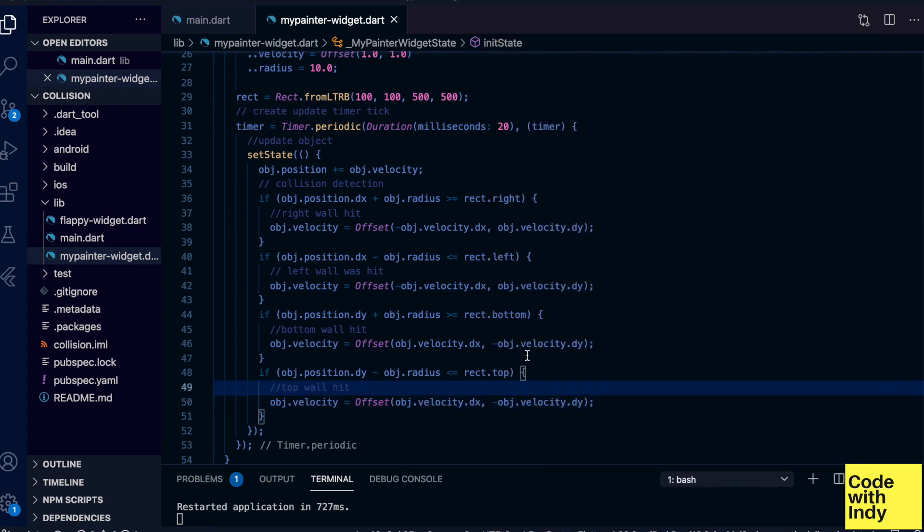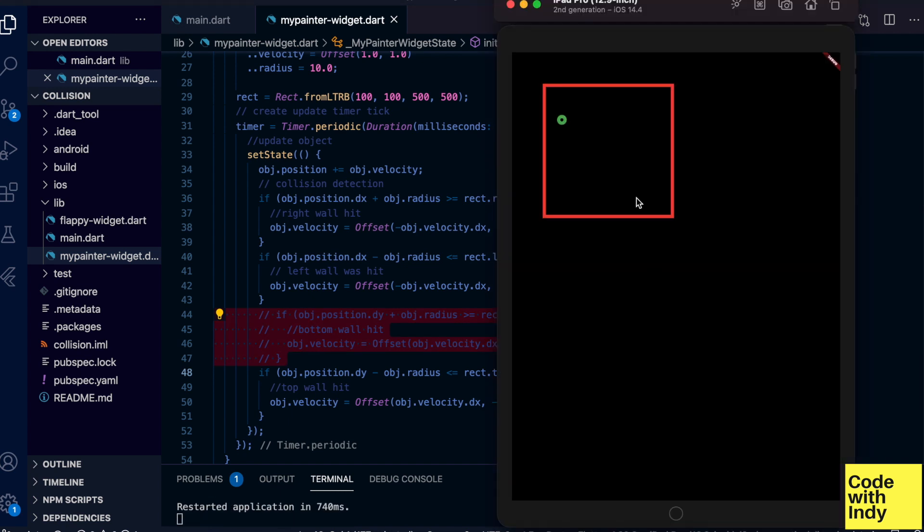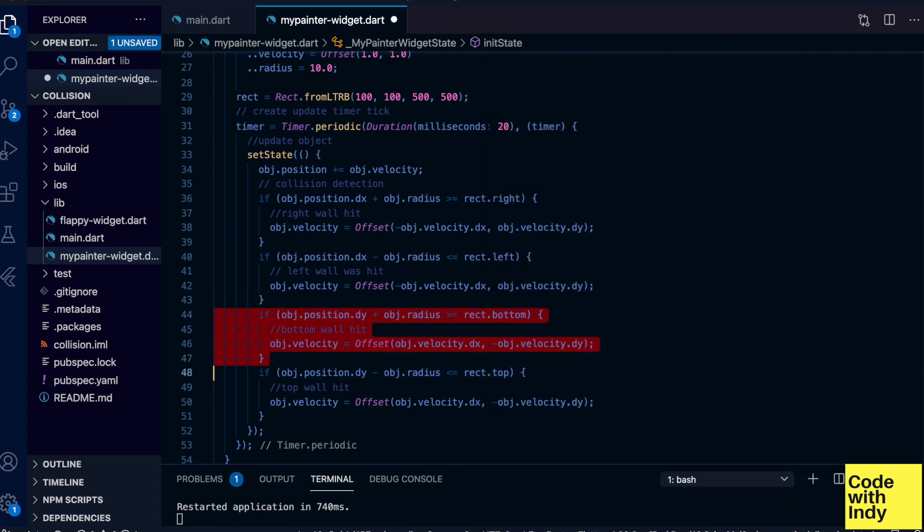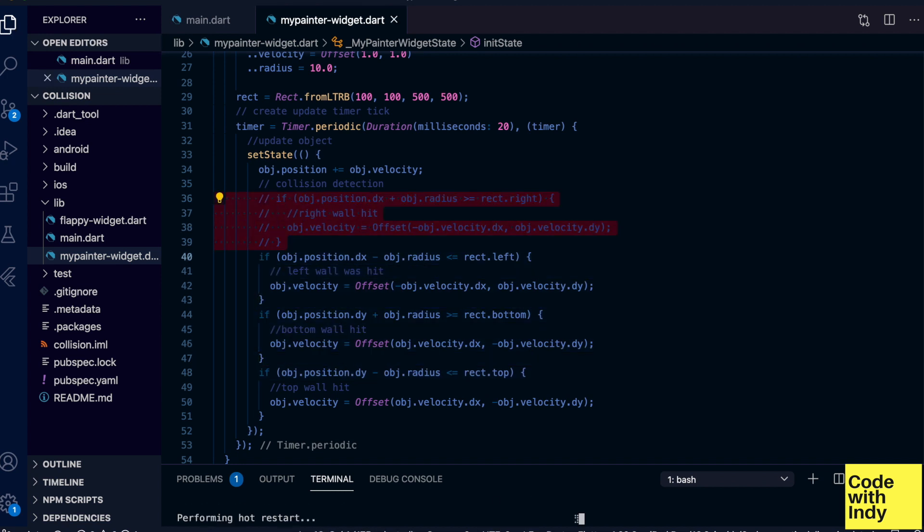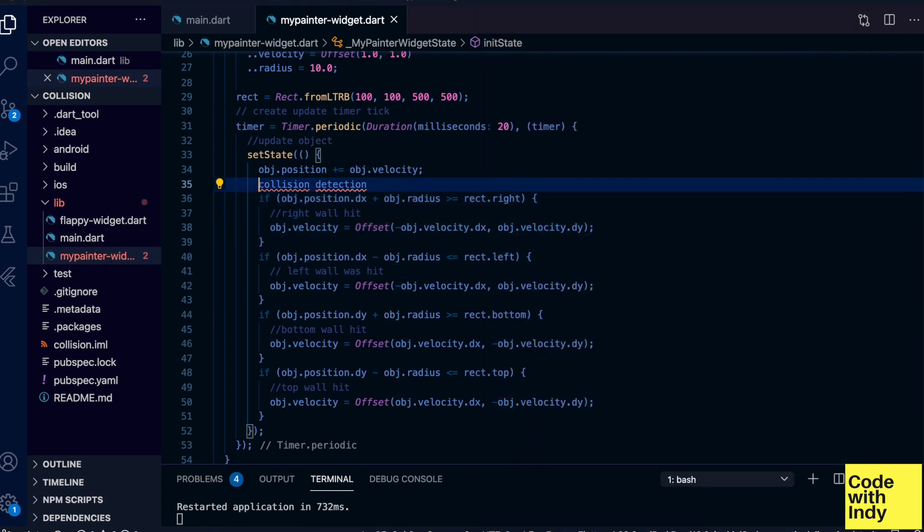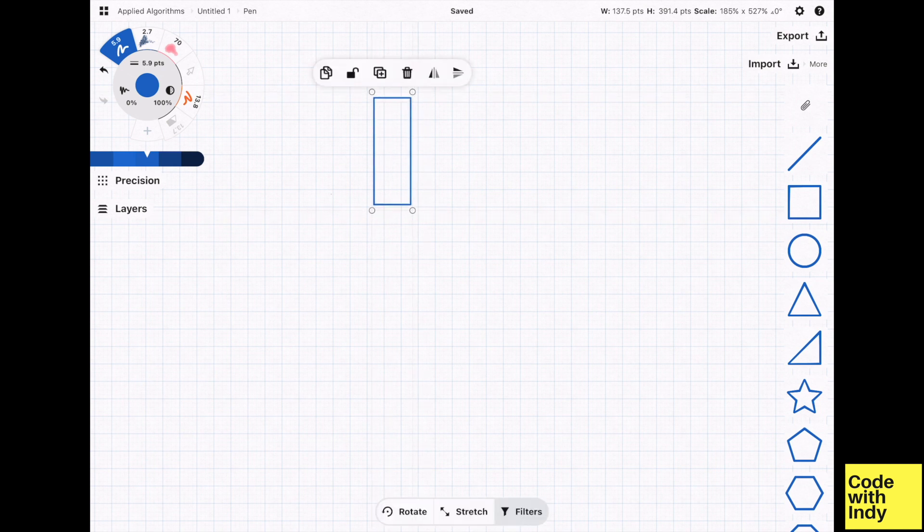Now let's remove one of these conditions and see the effect. Let's remove the bottom wall collision check. As you can see, the ball goes right through it. And another one, this time the right wall. Yep, nice. Great, so that's simple enough.